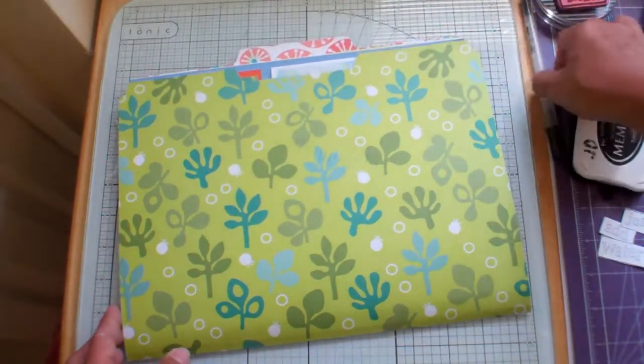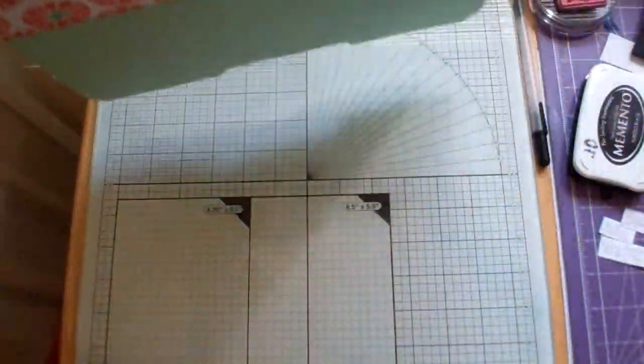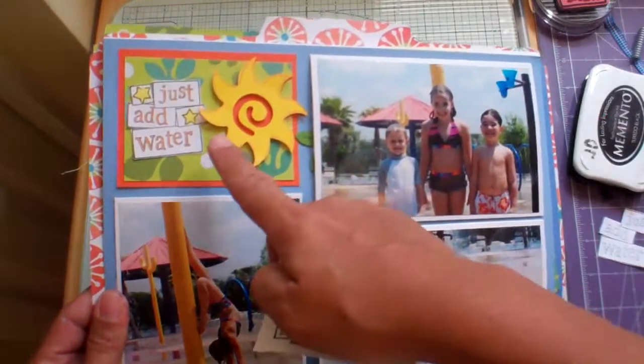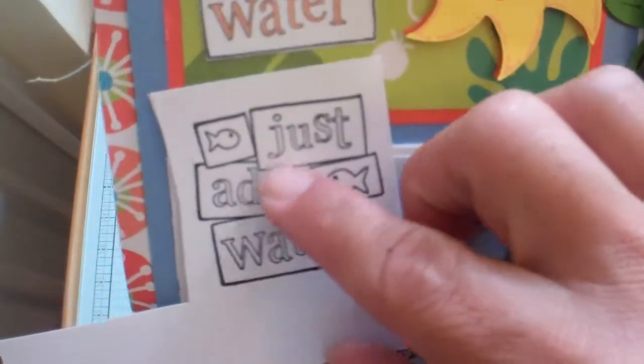Hello everybody, this is Janice. I'm going to show you how I took this stamp and was able to modify it. If you notice, the original has two little fish